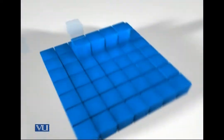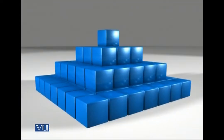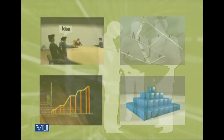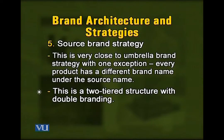Source brand strategy is very close to the umbrella brand strategy. The difference is that you have different sub-brands under one source name. Under umbrella, there is just one brand name given to all sub-brands. Under source branding, you have one source name and under that name you have different sub-brands, all of which could have different names. This is a two-tier or double level branding strategy.